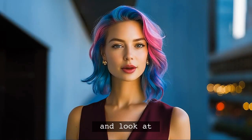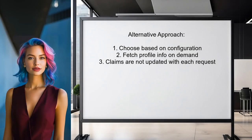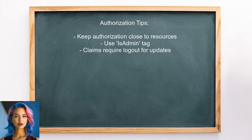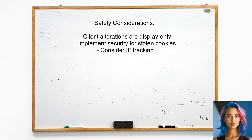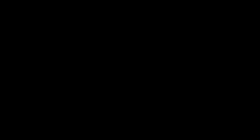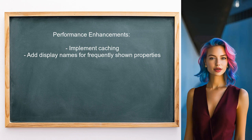Another user suggests that the choice between claims and properties depends on your specific configuration. You don't need to store all information in claims or have it available all the time; instead, you can fetch profile information from the server as needed. For authorization, they recommend keeping it close to the resource, like using an is-admin tag. Claims are not flexible for frequently changing properties, as they require a user to log out and back in to refresh. Client-side alterations are for display only and do not affect back-end permissions. They also suggest adding security measures for stolen cookies, like tracking IP addresses, and recommend using caching to reduce database calls, as well as adding display names for properties shown frequently on pages.